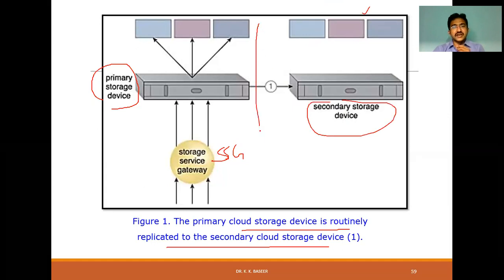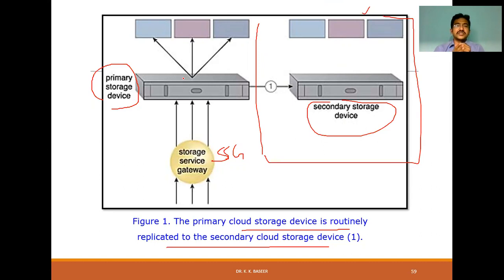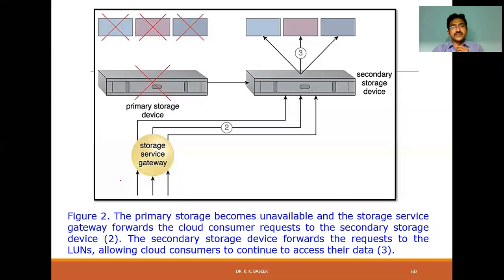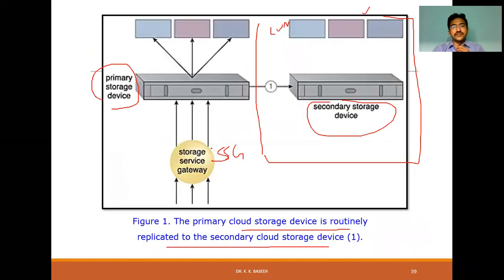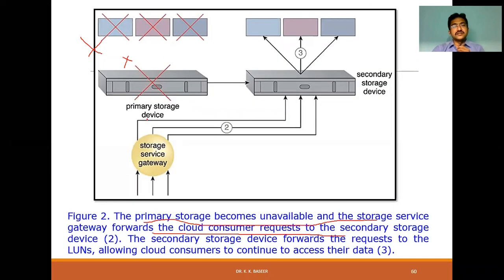In the first figure, the primary storage device is shown with the SSG and LUN partitions. The primary cloud storage device is routinely replicated to the secondary storage device using the same LUN structure. In the second figure, when the primary storage fails and becomes unavailable, the Storage Service Gateway forwards cloud consumer requests to the secondary storage device.